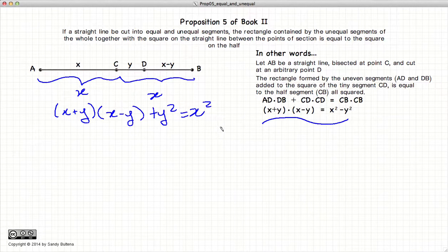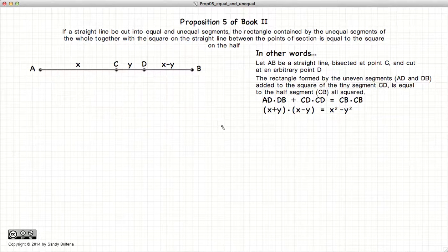But this being Euclid's Elements, we're going to prove this not algebraically but geometrically. So the first thing we're going to do is to draw a square on CB.